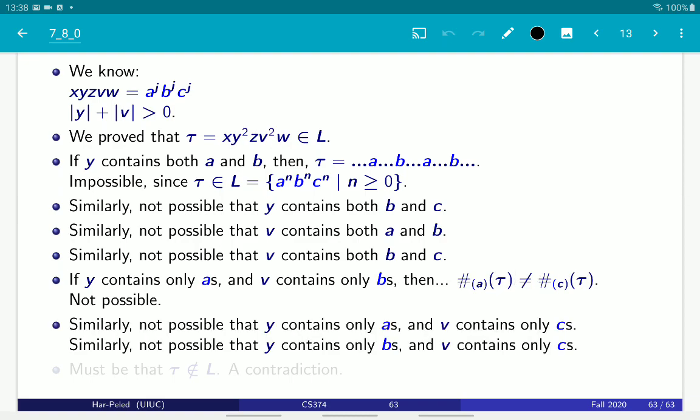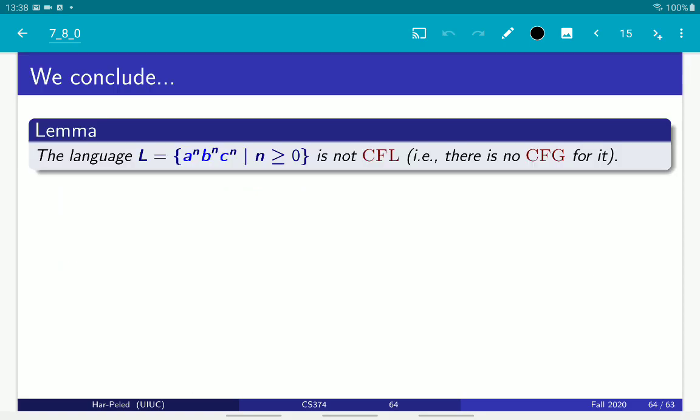And now we are essentially done. Because we can argue, similarly, that y cannot contain only a's and v contain only c's. It's not possible that y contain b's and v contain only c's. So, we ruled out essentially all possibilities. And it must be that the string tau is not in L, but that's a contradiction. Because tau has a valid parse tree, so it must be in the language. A contradiction, and the contradiction is toward the assumption that this language is a context-free language. So, we proved that it isn't a context-free language. So, that's the lemma that we got. The language a^n b^n c^n is not context-free language because there is no context-free grammar for it.